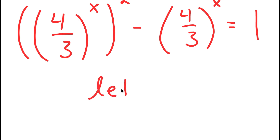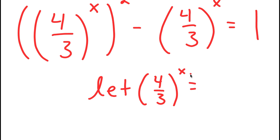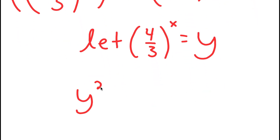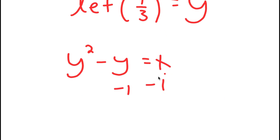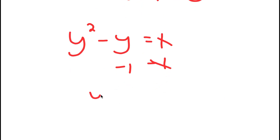Now I'm going to let (4/3) to the power of x equal the variable y. So if I substitute y for (4/3)^x, I get y squared minus y equals 1. Subtracting 1 from both sides gives y squared minus y minus 1 equals 0.